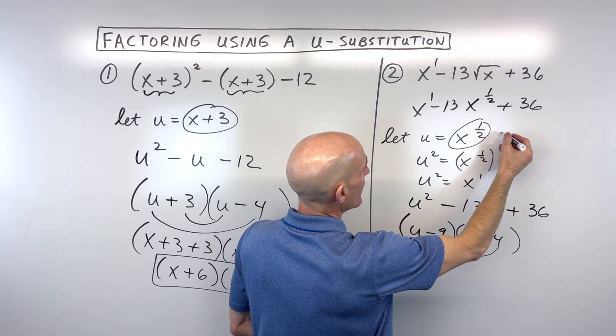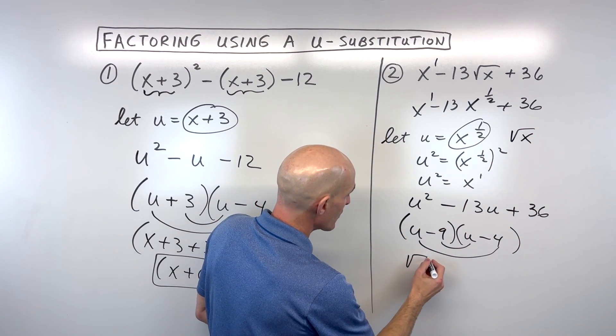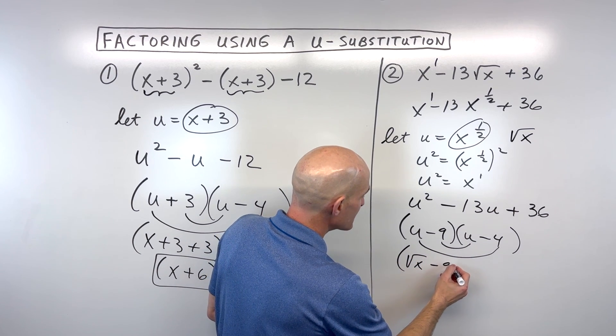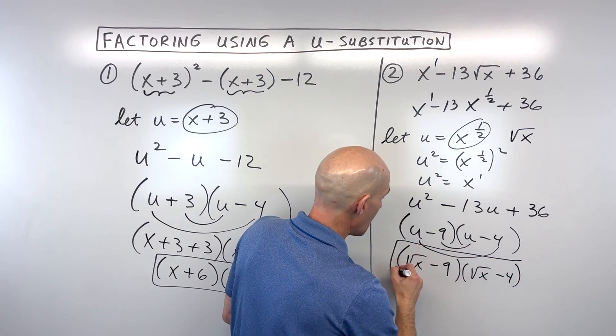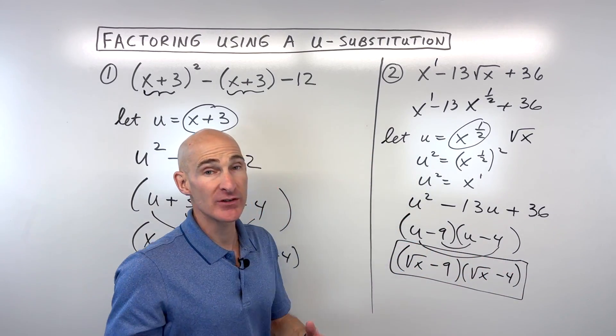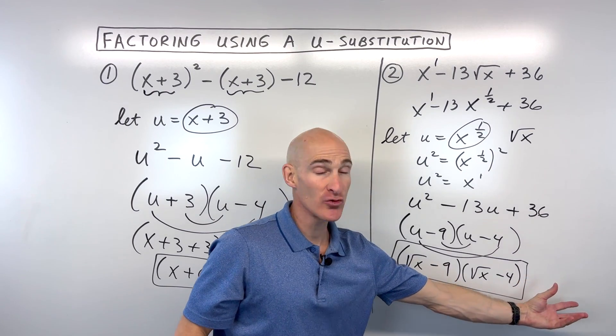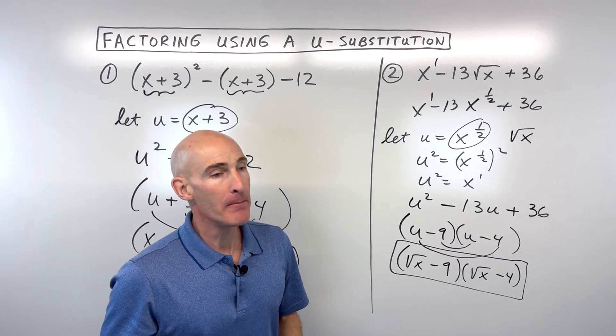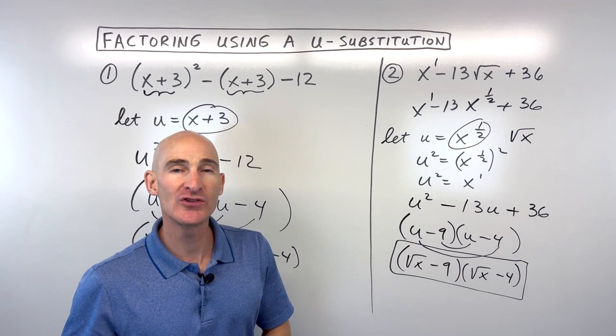So let's go ahead and replace u with square root of x minus 9, and over here u is equal to the square root of x minus 4, and now we have it factored. Now if it was an equation, like if this was equal to zero, we could set each of these factors, each of these groups equal to zero and solve. But for right now, we're just practicing our factoring. So let's look at one more example, see if you can do this one on your own.